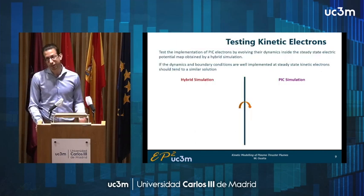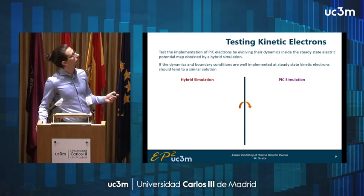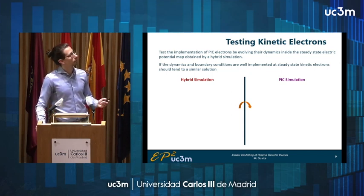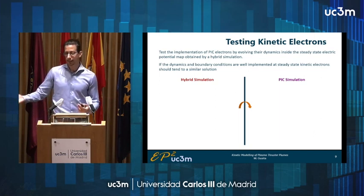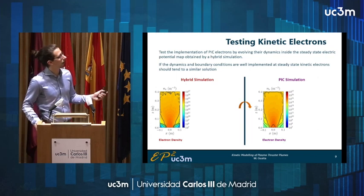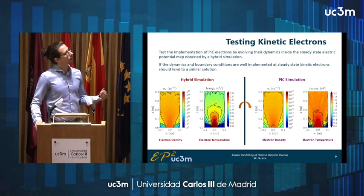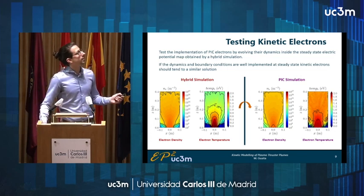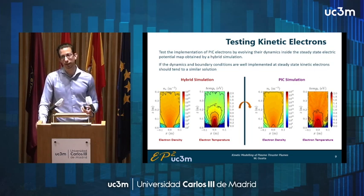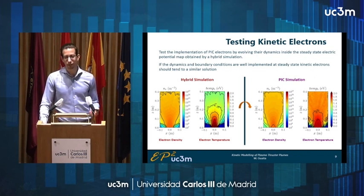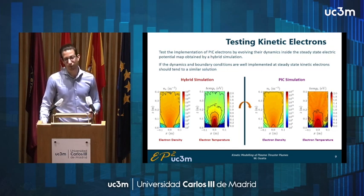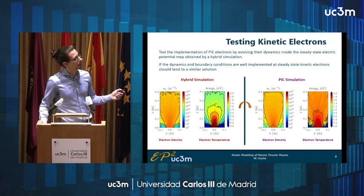A final thing I have been working on in the last month is the implementation of particle electrons. A first testing strategy is to evolve these particle electrons inside a steady-state potential map obtained through a hybrid simulation. We expect that at steady state the particle electrons should tend to a similar solution to the one obtained with the hybrid simulation. Indeed, this is what we obtain for the electron density — some very nice results. On the other hand, for the electron temperature, the results are not so nice. This can be explained by a series of effects. The most important is that the electron temperature in the hybrid case is due to the choice of the polytropic parameter γ, which is a free variable of our simulation. By tuning this parameter, we should be able to make the hybrid electron temperature tend toward the particle one. Moreover, in the hybrid case we have coded some electron collisions which are not yet present in the PIC simulation.